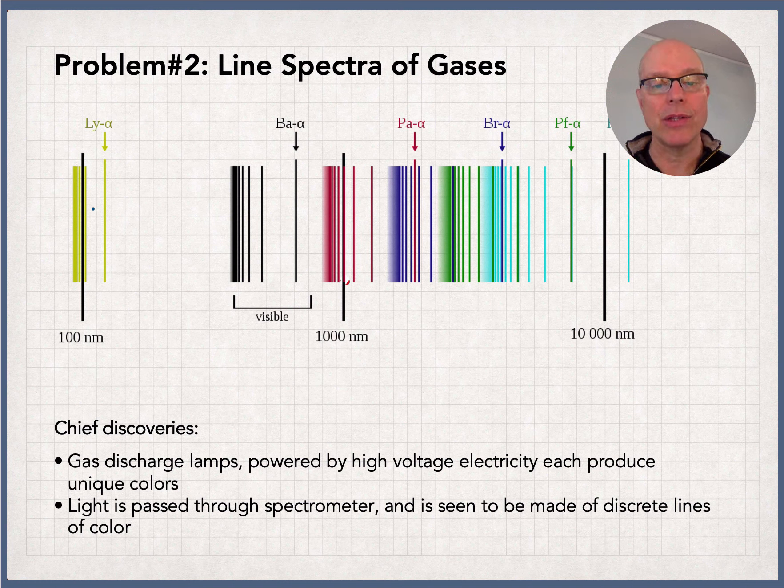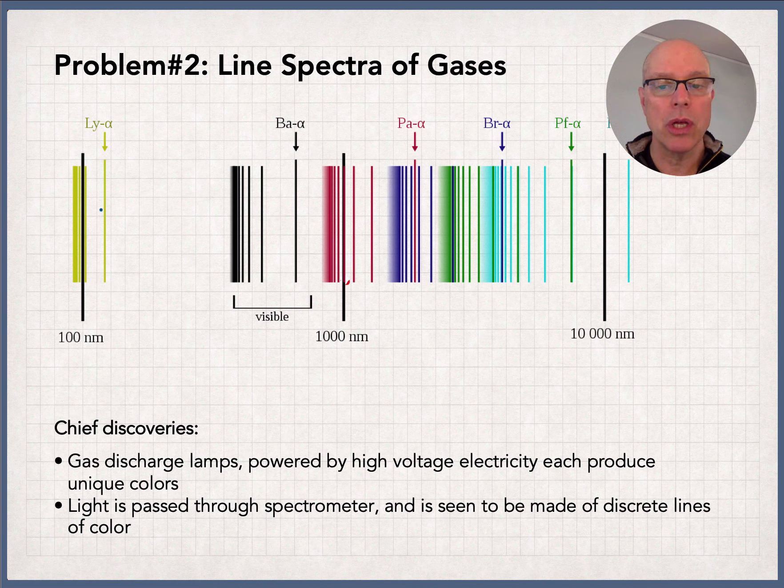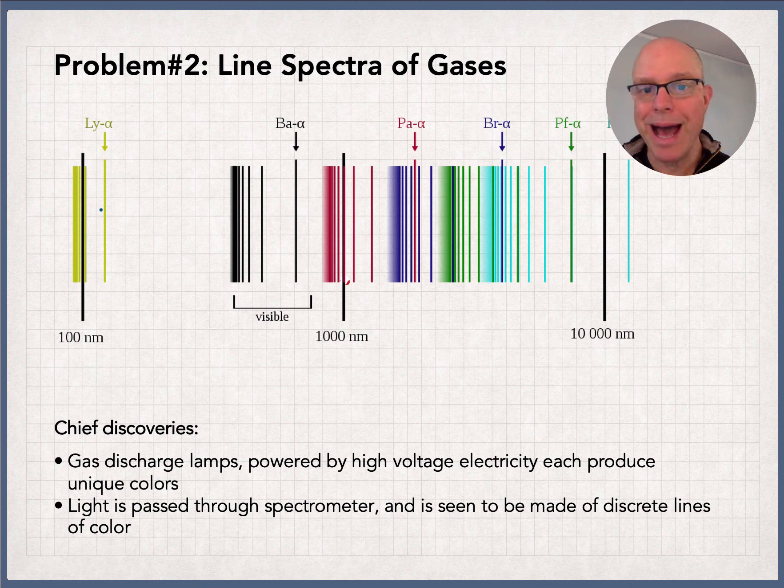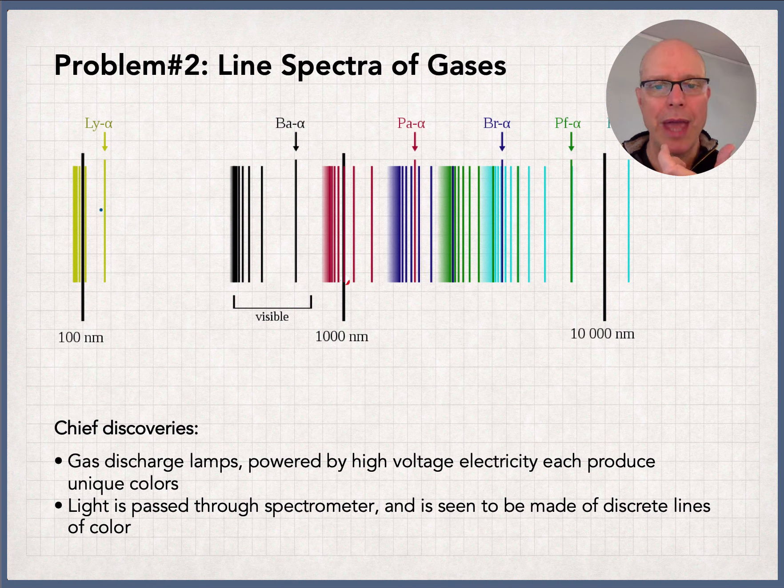So this is a giant mystery. Why would atoms of a gas not give off all the colors, but only specific colors? The solution to this problem ended up dramatically changing what we thought we knew about the smallest level of the world, the atom itself. That's the story for today.